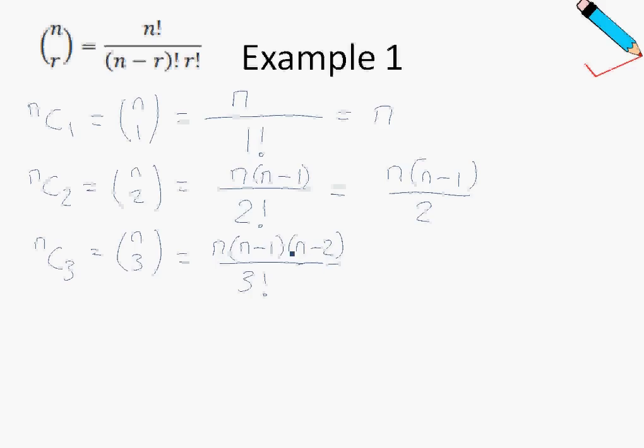Once again, why did I stop here at n minus 2? Because I see a number 3 here, this means that I'll have 3 terms in the numerator. As you can see, there are 3 terms here. And once again, I can simplify this.